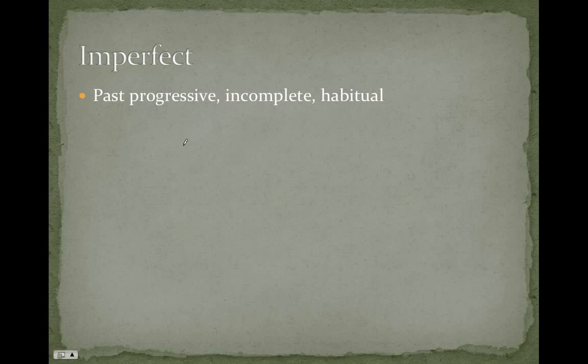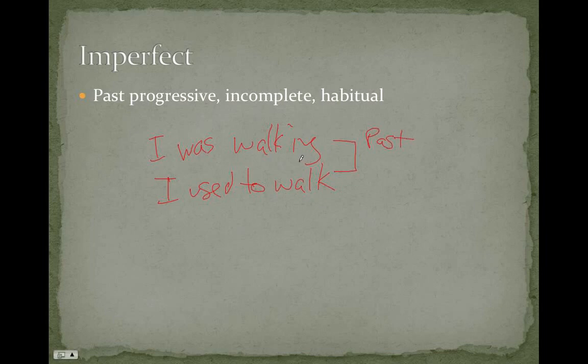The imperfect tense is a past tense, that is, it's something that's going on in the past, and it's ongoing, it's progressive, or it's incomplete, or it's habitual. So, you would say in English, I was walking, or I used to walk. Both of these are in the past, and both are not complete, that literally is what imperfect means, not complete in Latin.